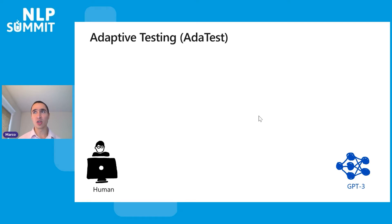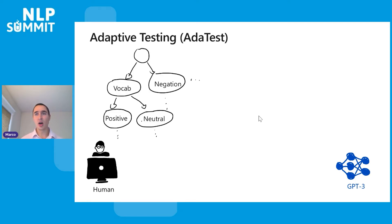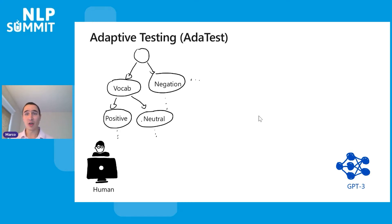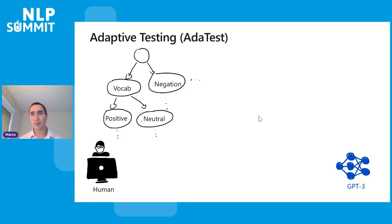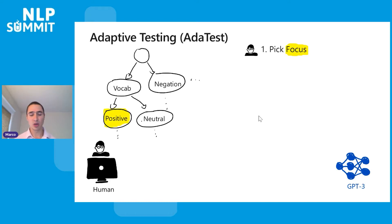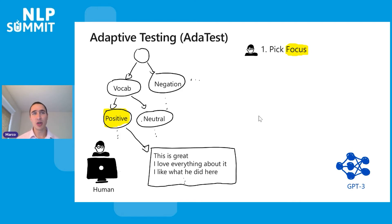We assume the human is going to be working on a tree of tests. You can think of capabilities as the first level in the tree. For example, if I'm testing the vocabulary of a sentiment analysis model, I can say I'm going to have a sub-node under vocabulary that is just looking at positive terms, another one looking at neutral, and so on. Adaptive testing has three steps. First, the human selects the focus of what to explore — say, positive sentences — and provides a few examples like 'This is great,' 'I love everything about it,' 'I like what you did there.'